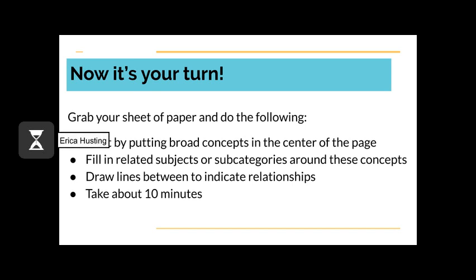And now it's your turn. On a separate sheet of paper, make a concept map of potential topic ideas based on your class assignment. Start by putting a broad concept that interests you in the center of the page and fill in related subjects and subcategories around it. Draw lines between them to indicate relationships. Please feel free to pause this video as you create your concept map. If you are having trouble getting started, it's okay to do a quick Google search and read up on your topic to establish a foundational understanding. That is the end of our time talking about concept maps today. Thank you so much for your time and attention, and best of luck on your research journey.